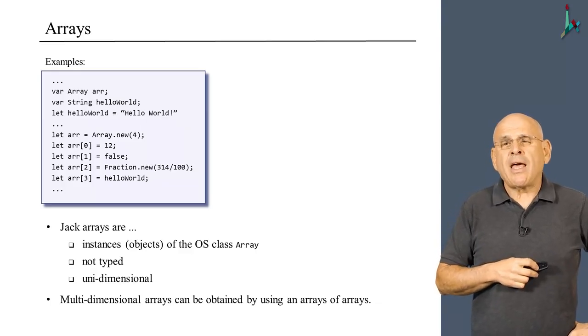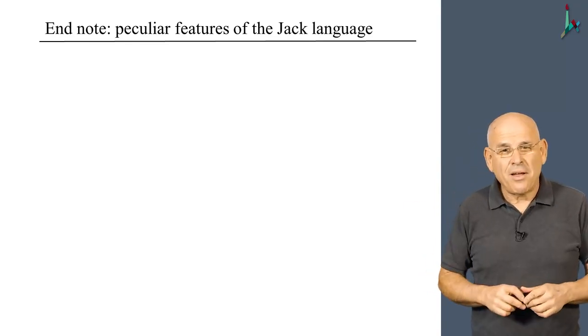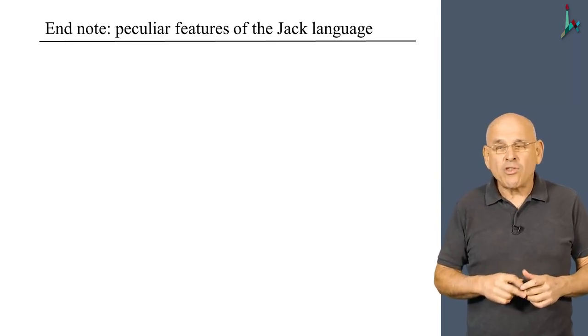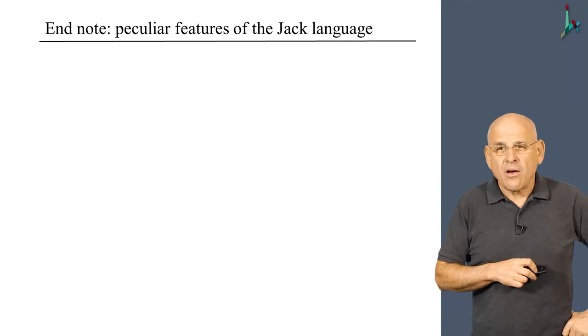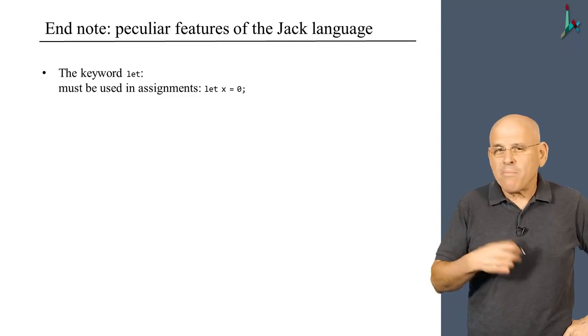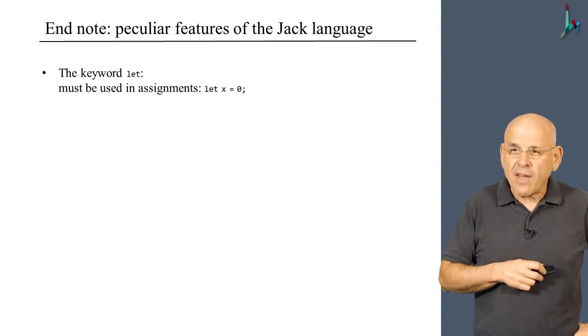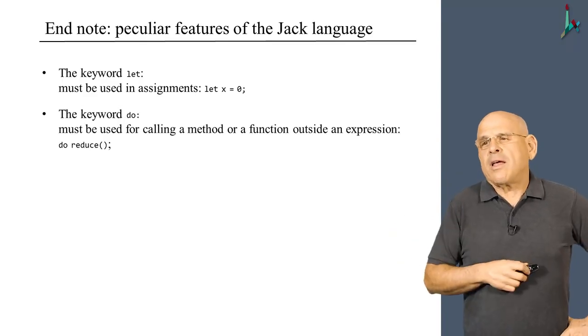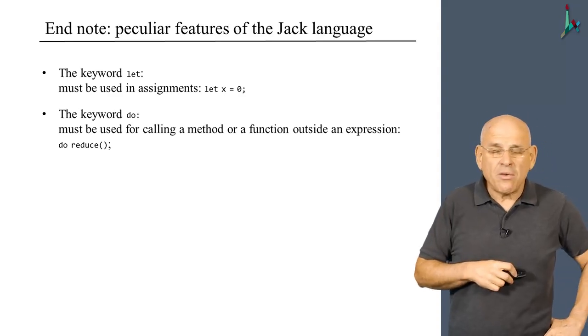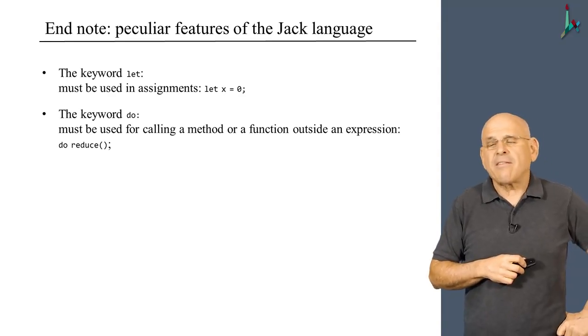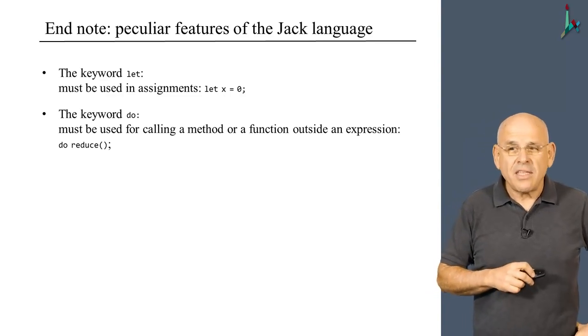Toward the end of this unit, I'd like to summarize some, but not all, of the peculiar features of the Jack language of which you should be aware when you set out to write your program in Jack. First, we have this strange let prefix that we must use whenever we do assignment. Same with do—when we call a method for its effect, we use the term do. Unless the method returns a value, and then we can assign the value to a variable with the let prefix. We use these prefixes because it makes the writing of the compiler easier.